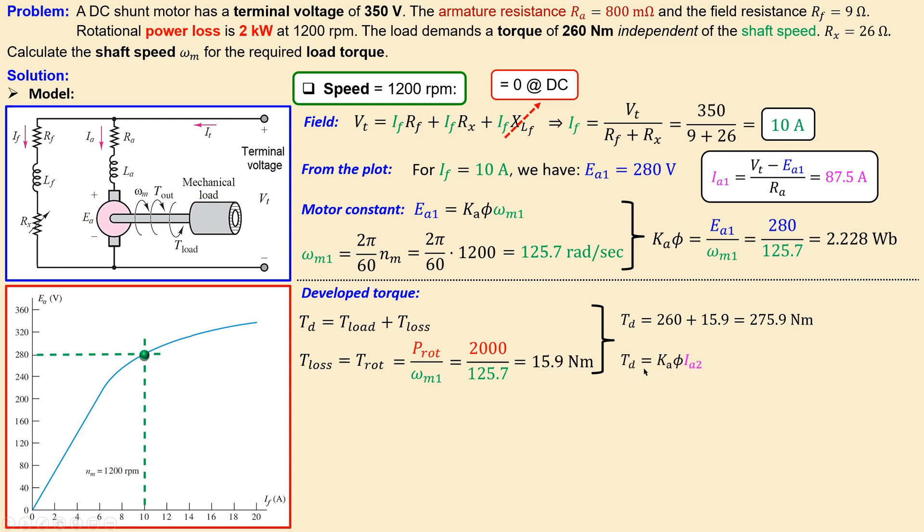We can now use this formula to calculate the required armature current for this case because the developed torque is also equal to the motor constant times the armature current. We can calculate the armature current which is the developed torque divided by the motor constant. We have the necessary information, we have now 123.8 amperes.